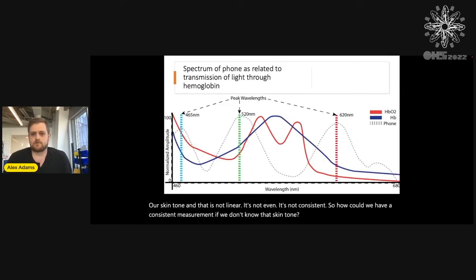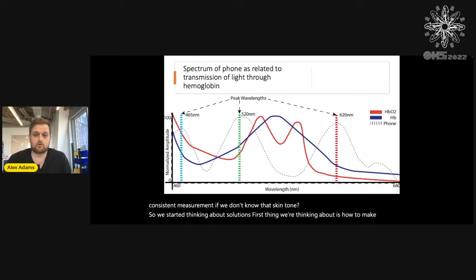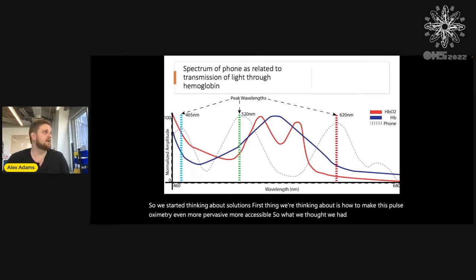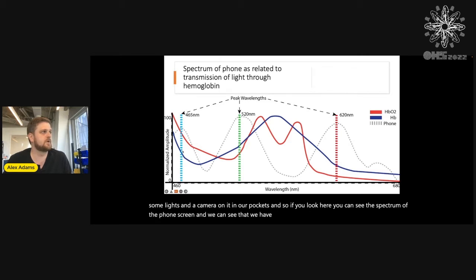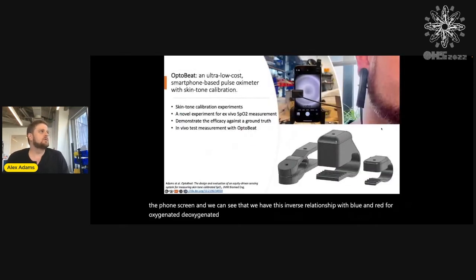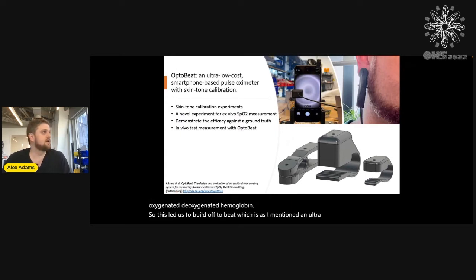We started thinking about solutions — how to make pulse oximetry more pervasive and accessible. We thought: we have a little computer with lights and a camera in our pockets. Looking at the spectrum of the phone screen, we can see this inverse relationship with blue and red for oxygenated and deoxygenated hemoglobin. This led us to build OptoBeat — an ultra low cost, smartphone-based pulse oximeter with skin tone calibration.